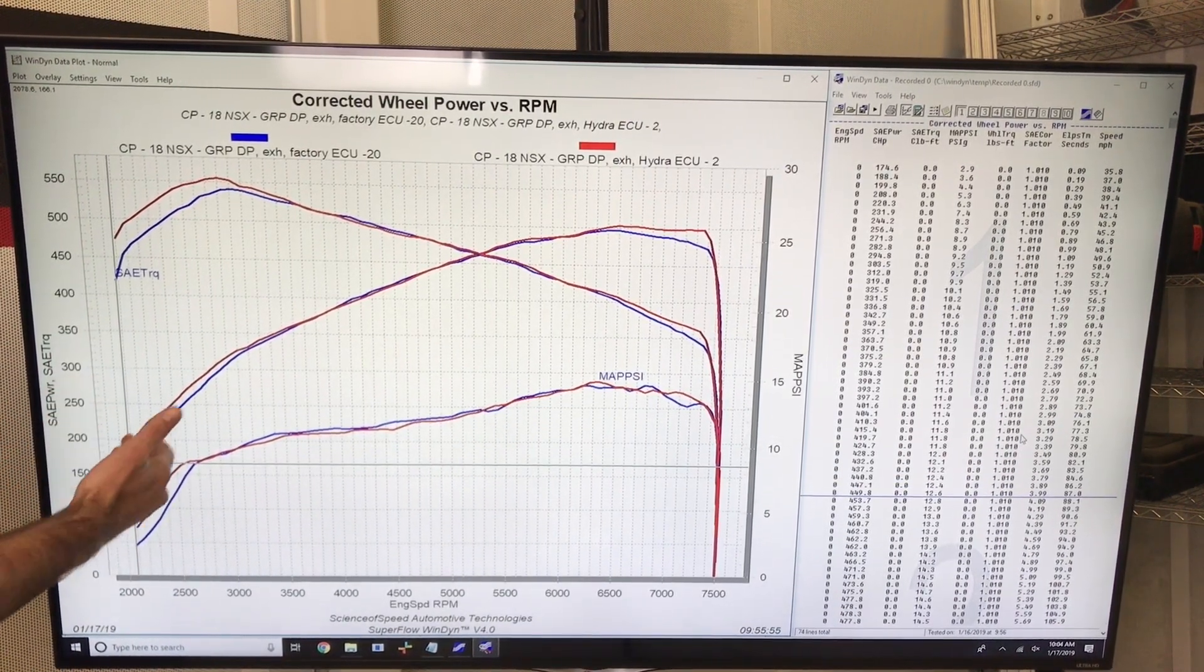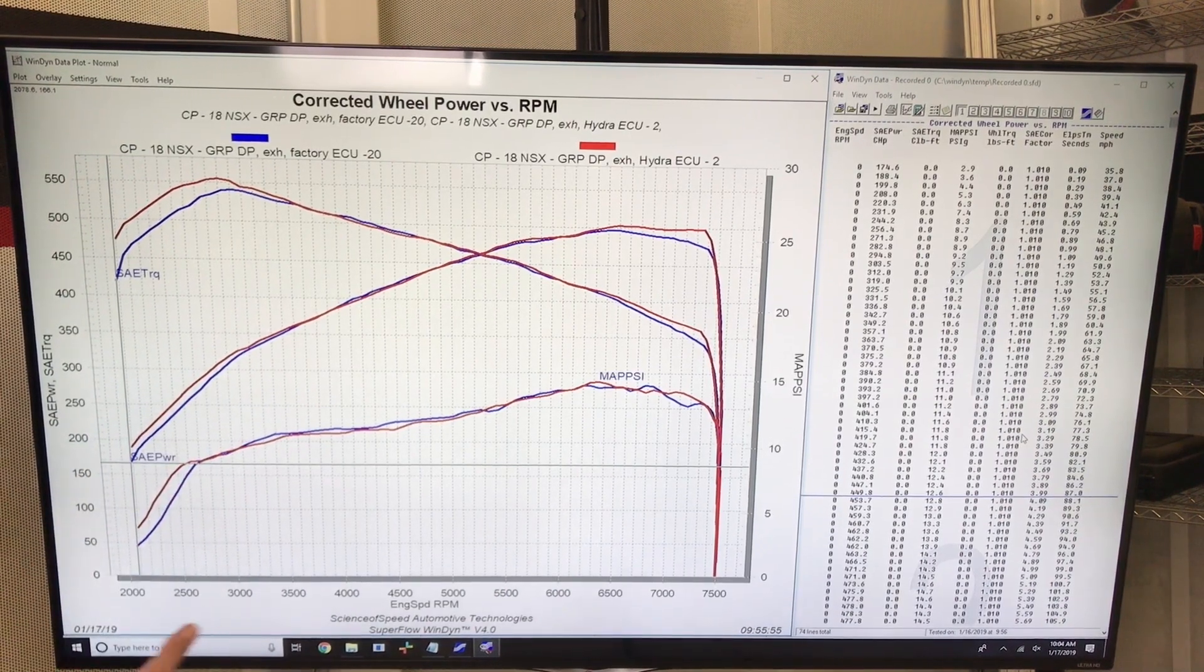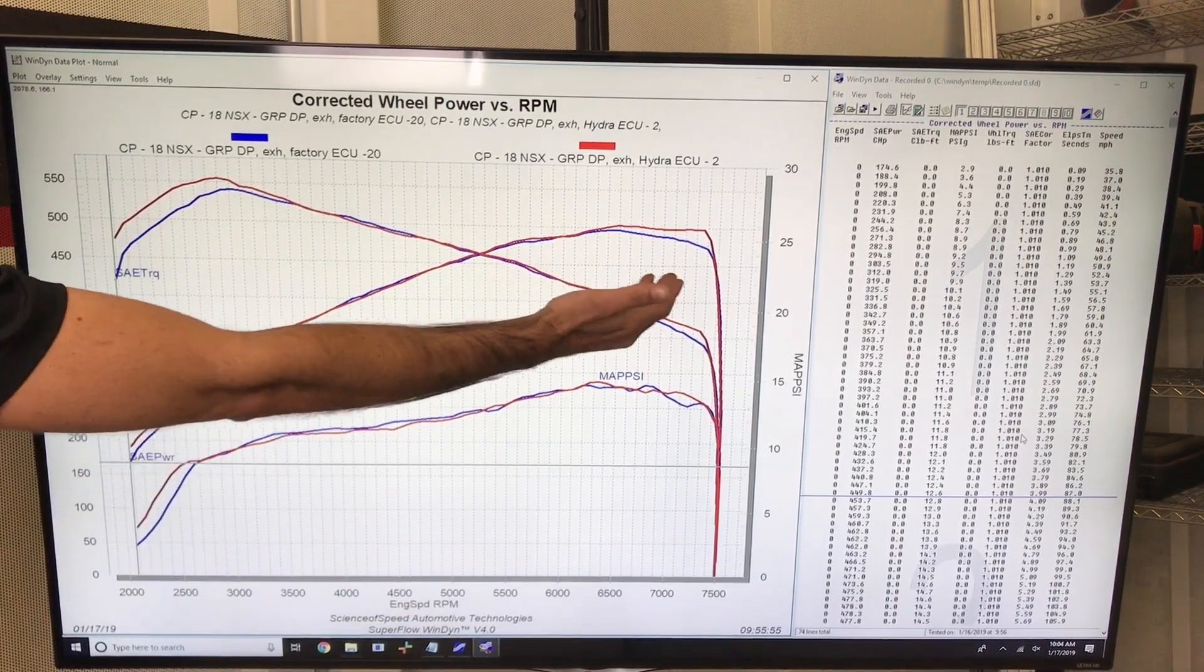You can see there's a little bit of a gain here on the low end until about 3,000 RPM and then a gain here at about 6,000 RPM.